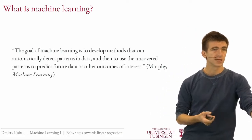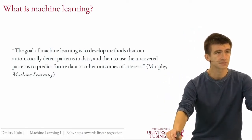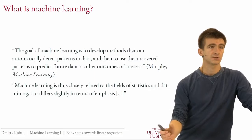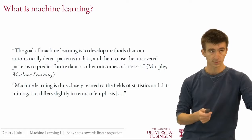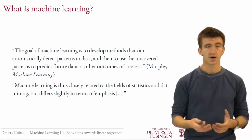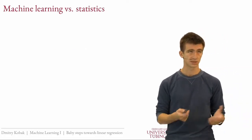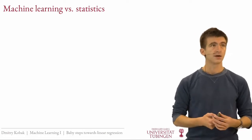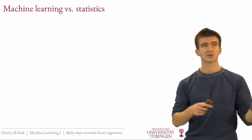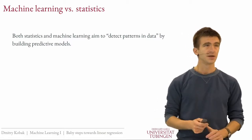Here is another definition from a textbook: the goal of machine learning is to develop methods that can automatically detect patterns in data, and then to use the uncovered patterns to predict future data or other outcomes of interest. Murphy, the author, continues to say machine learning is thus closely related to the fields of statistics but differs slightly in terms of emphasis. Of course, statistics also detects patterns in data and tries to predict outcomes of interest — so what is this different emphasis? This is a topic where you can find a lot of discussions, with some people saying statistics and machine learning are the same, or that they intersect, and the part of statistics that is not machine learning is useless, or the part of machine learning that is not statistics is just engineering, and so on. It's a very hotly debated topic.